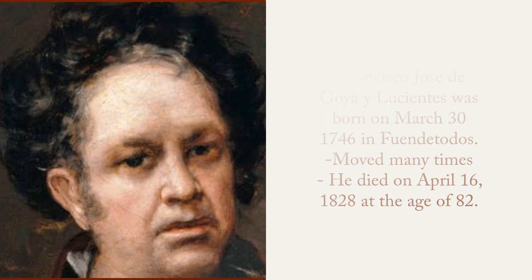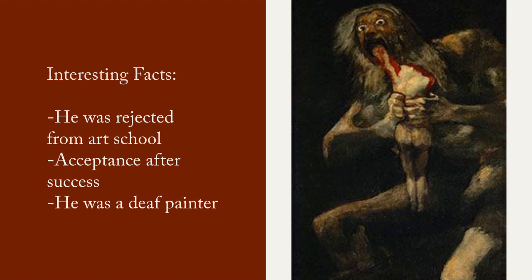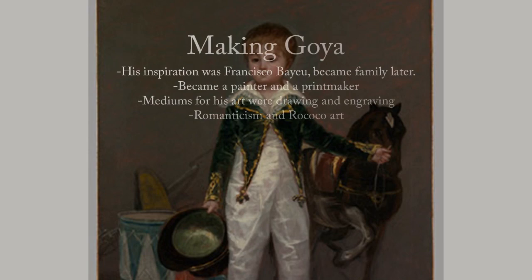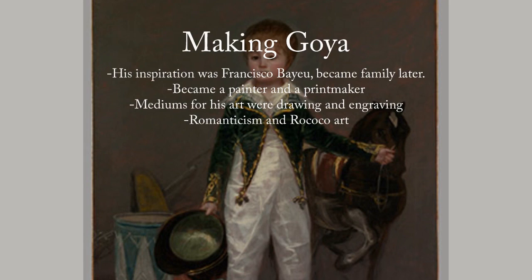An interesting fact about the Spanish artist is that he was rejected from art school. After he gained success, he was finally accepted. He was a deaf painter after a horrible accident. De Goya's inspiration was Francisco Bayeu, who later became his brother-in-law. This inspiration led him to become a painter and a printmaker. The mediums he would use for his famous paintings were drawings and engravings. He made Romanticism and Rococo art.